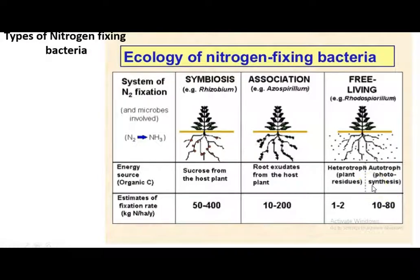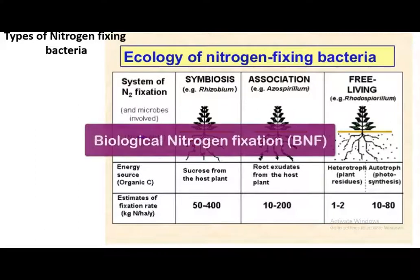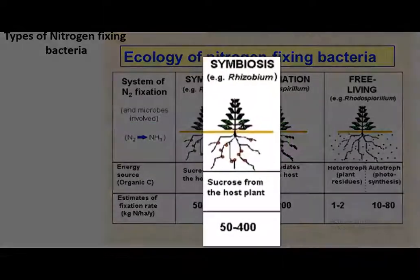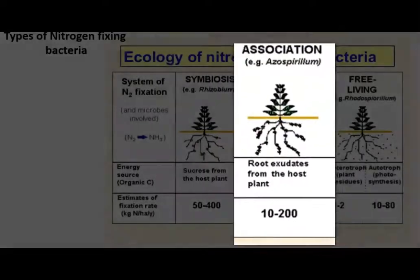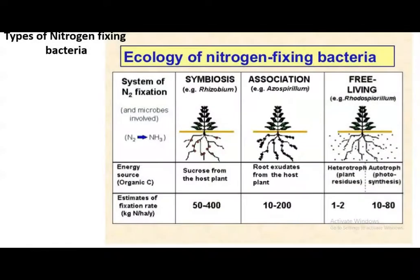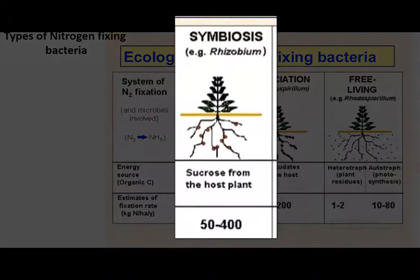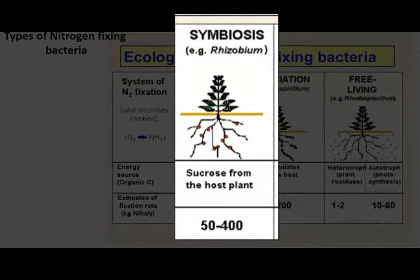Regarding the types of nitrogen-fixing bacteria, the process is referred to as biological nitrogen fixation. These bacteria can be symbiotic, associative, or free-living in nature. The organism we are dealing with in this practical, Rhizobium, is an example of a symbiotic nitrogen fixer.